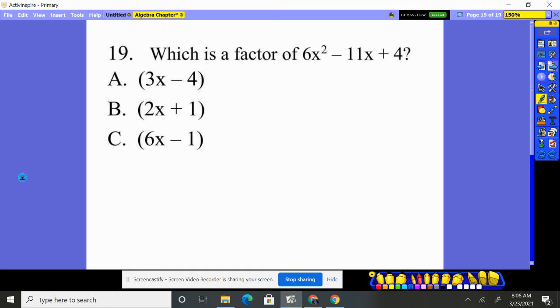And this one, which is a factor of this. Okay, well, let's do the same idea. 3x times what gives you 6x²? 2x. And then the negative four times negative one will create that positive four on the back. So we created the front and the back.